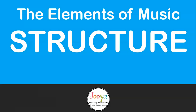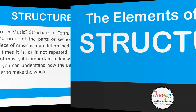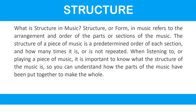Let's go a bit further into what structure — or form — is in music. Structure or form refers to the arrangement and order of the parts or sections of the music. The structure of a piece of music is a predetermined order of each section and how many times it is or is not repeated. When listening to or playing a piece of music, it is important to know the structure so you can understand how the parts have been put together to make the whole.